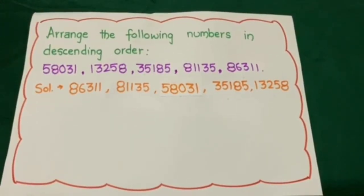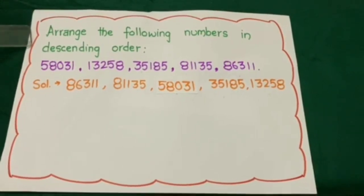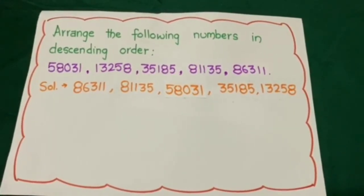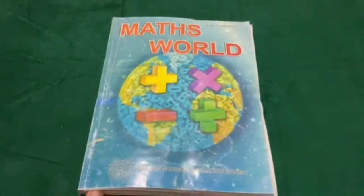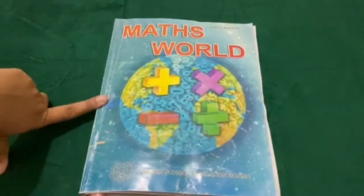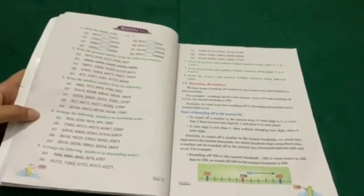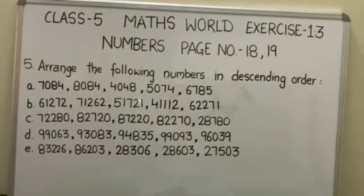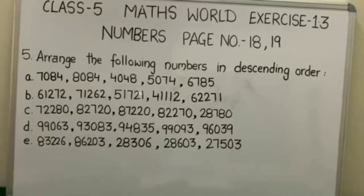Now you have learned to arrange numbers in descending order. In your notebooks write the question, then the part you are answering, and at last the solution. For homework, from your mathematics book at page number 18 and 19, solve question number 5: arrange the following numbers in descending order. There are five parts — solve these in your notebooks. Thank you.